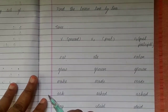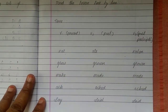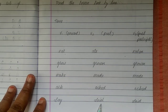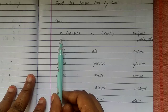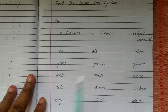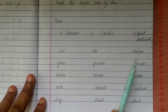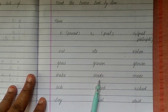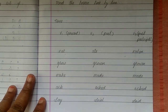In our book and lesson, there are five important things to identify. V1 is the present form, V2 is past, V3 is past participle. For example: Eat, Ate, Eaten. Grow, Grew, Grown. Make, Made, Made. Ask, Asked, Asked. Say, Said, Said.